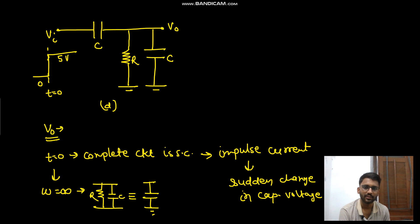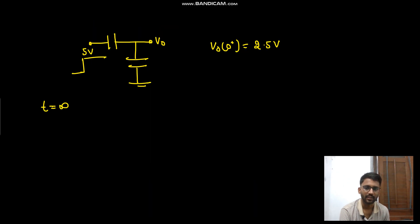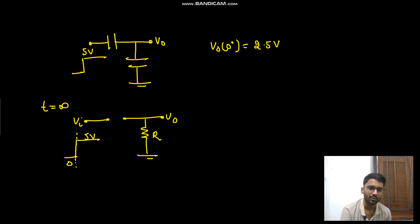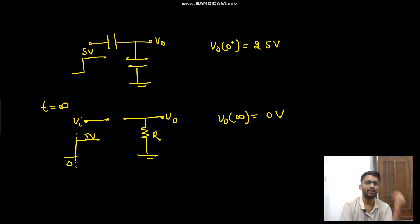At t goes to infinity, the capacitors will be open circuited. So at t goes to infinity, this is open circuited, this is the resistance R, this is your v0, and here you have v_in from 0 to 5 volt. So your v_naught at t equals to infinity will be 0 volt.